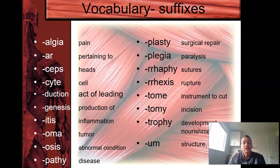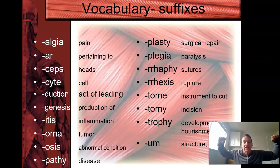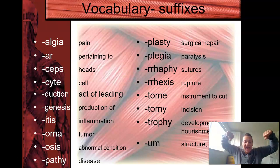CITE means cell — for example, leukocyte refers to white blood cells. DUCTION means the act of leading, so abduction is leading away, and adduction is bringing towards. AB is taken away; ADD is bringing towards.